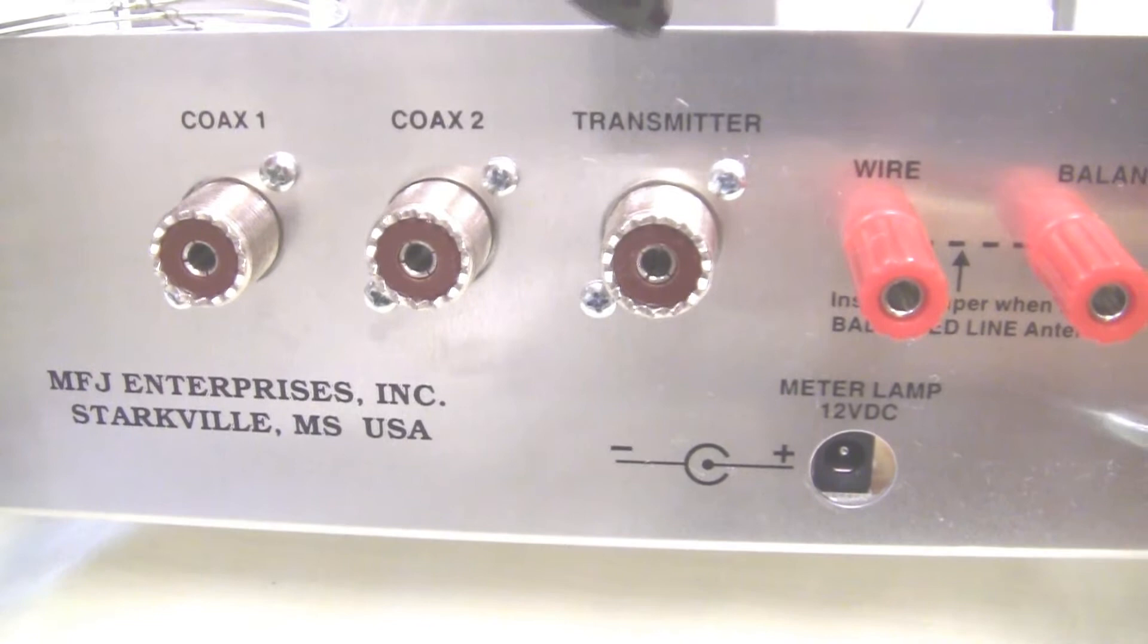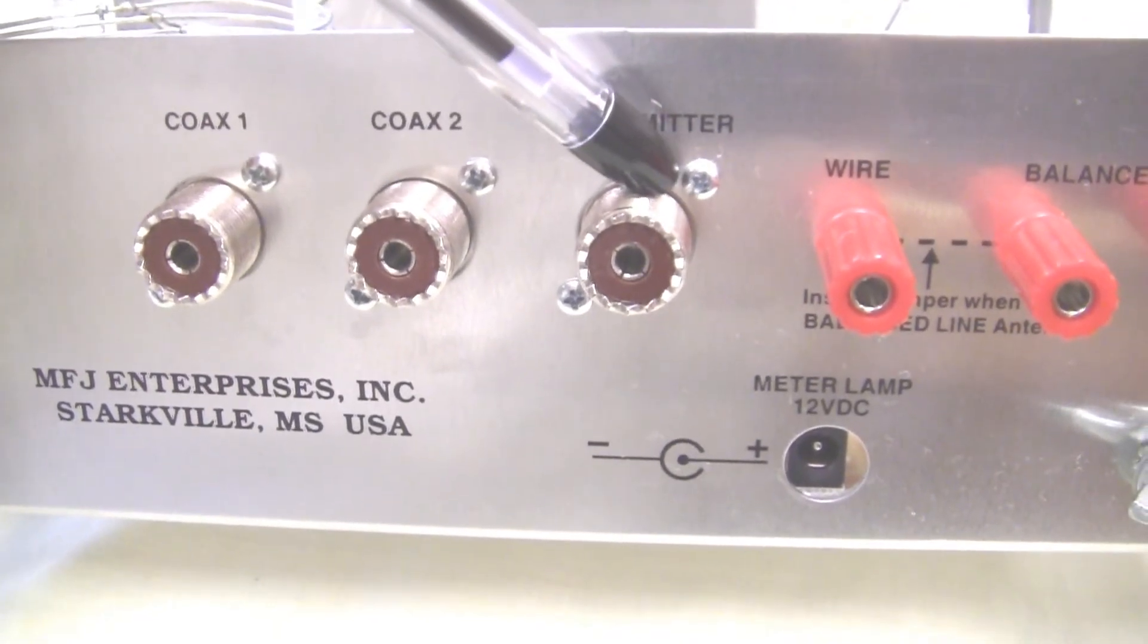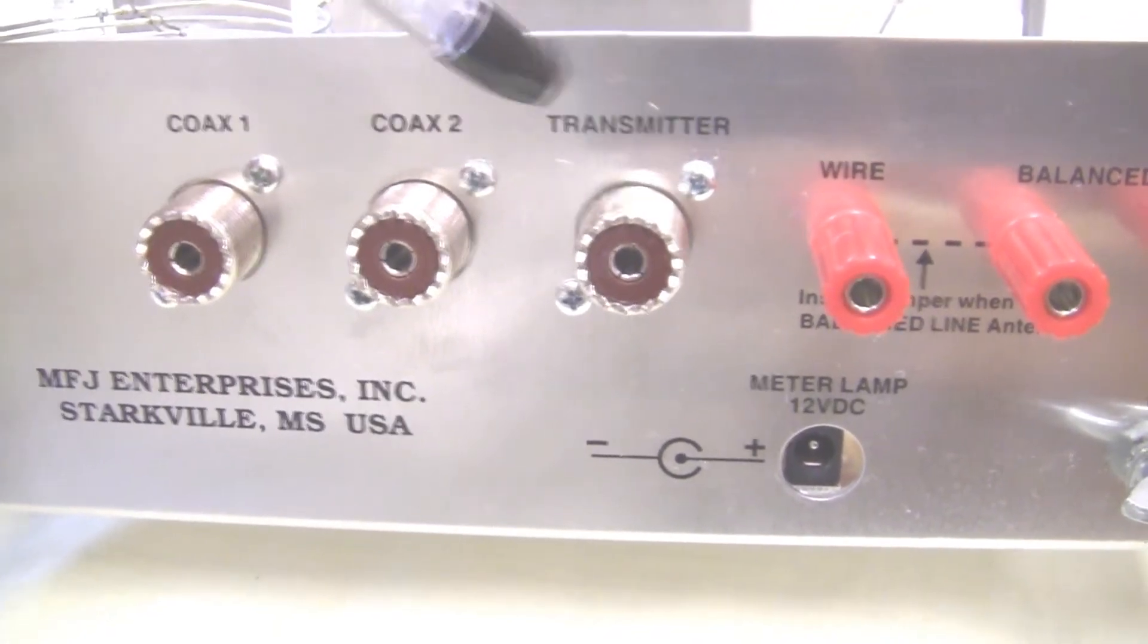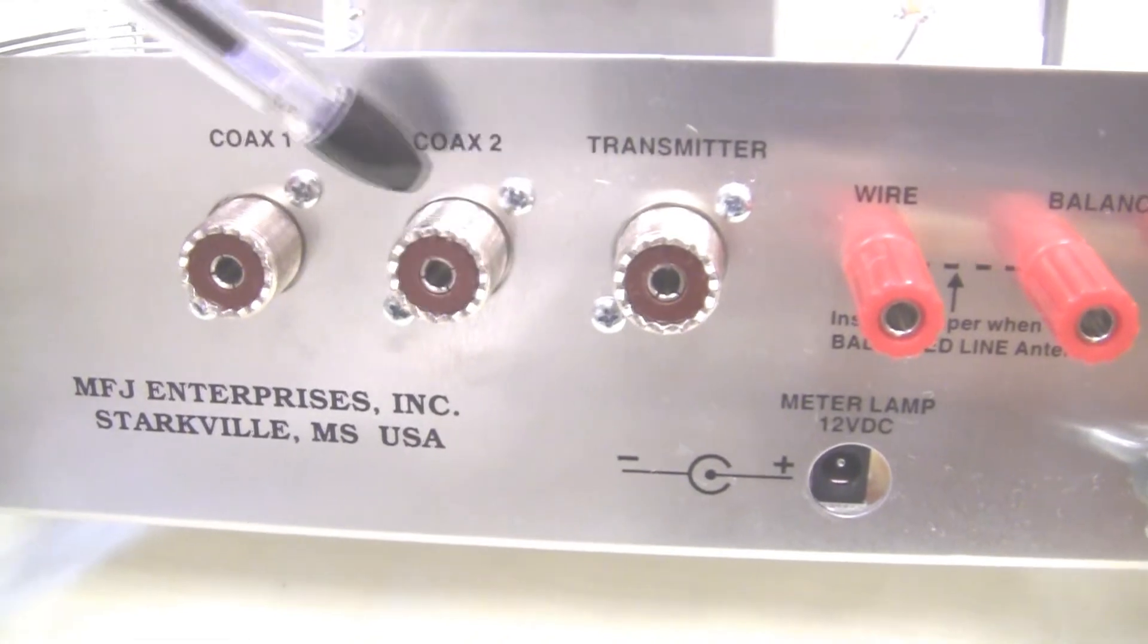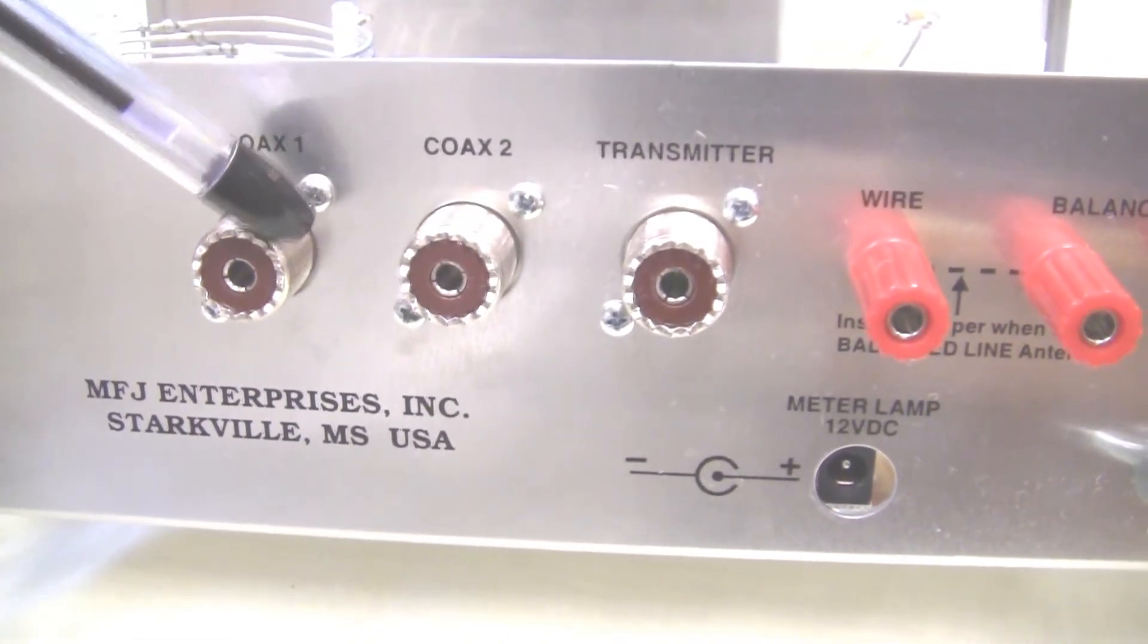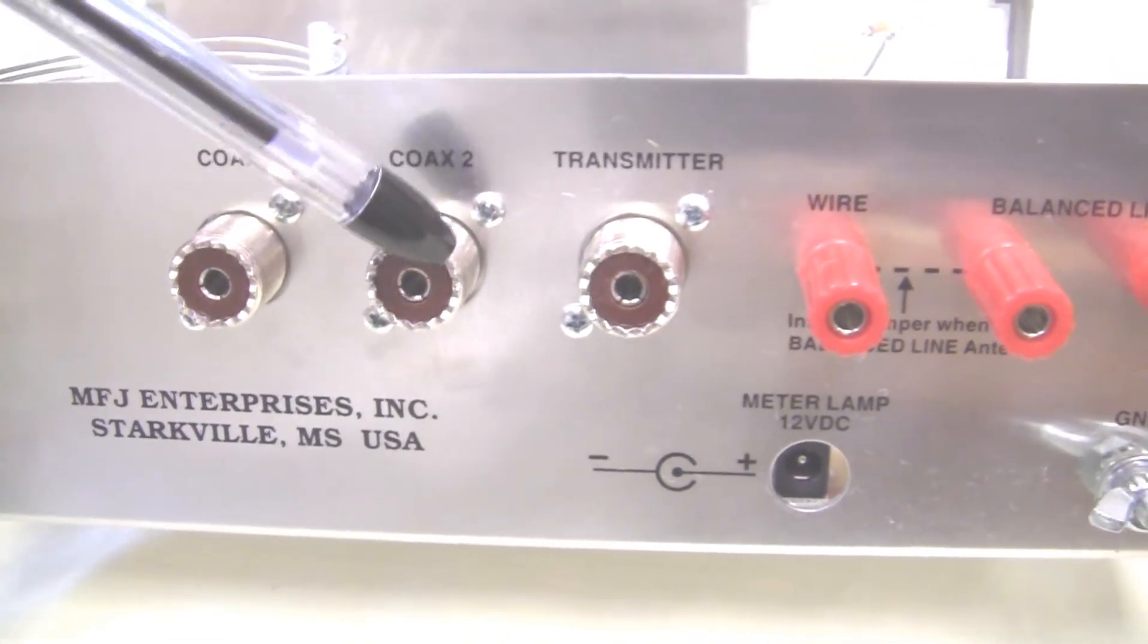Looking at the back side, here we see where we hook the transmitter up. This coax goes to your output of your transceiver. You have two places where we can hook up two different coaxes, two antennas if we have two, coax one and coax two.